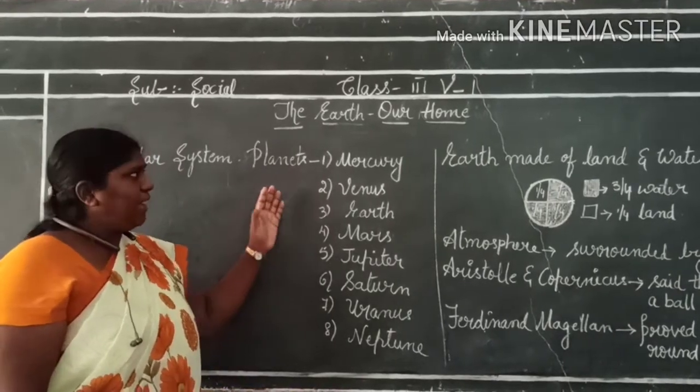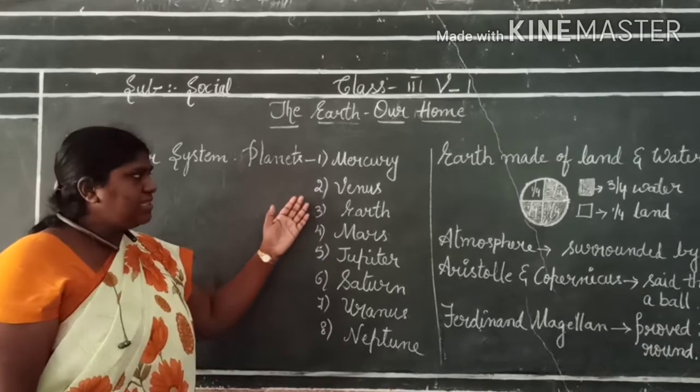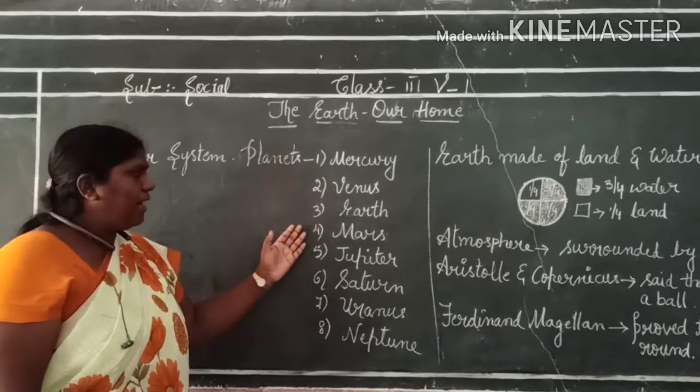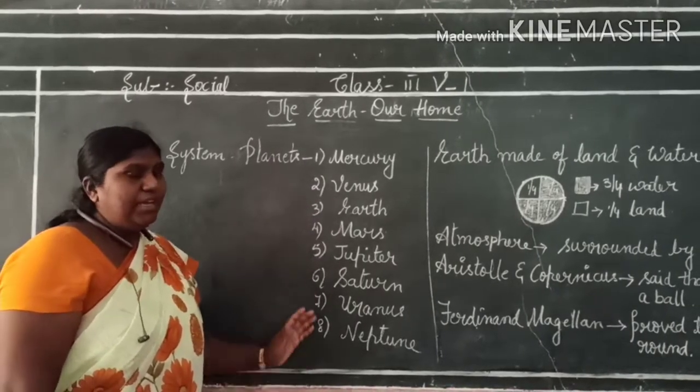The 8 planets are: Mercury, Venus, Earth, Mars, Jupiter, Saturn, Uranus, and Neptune.